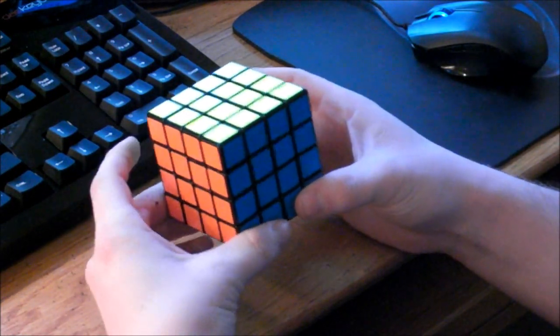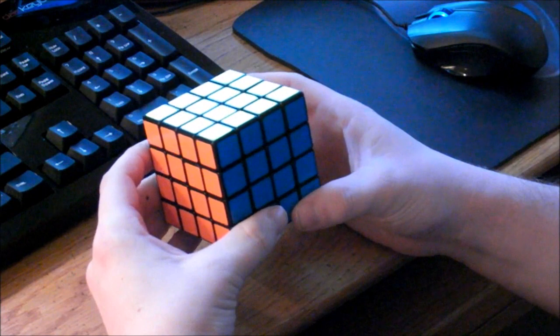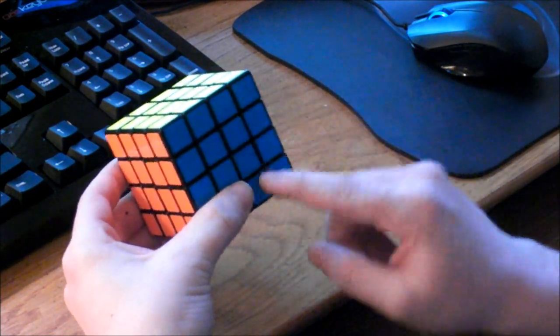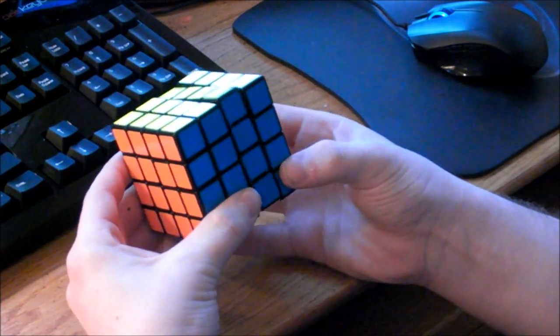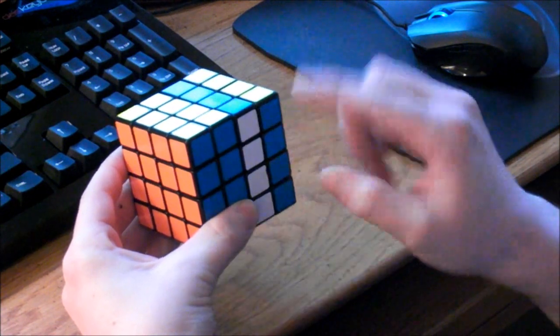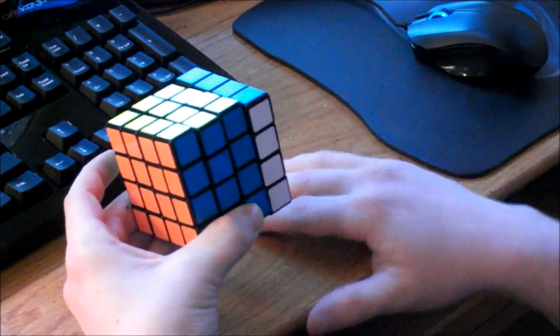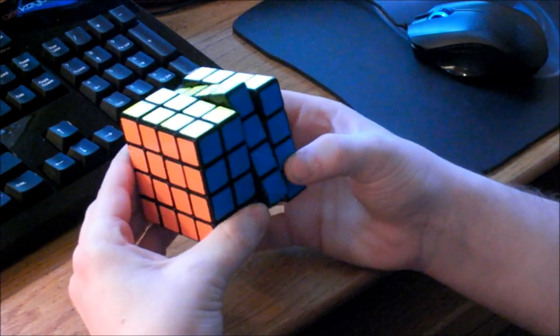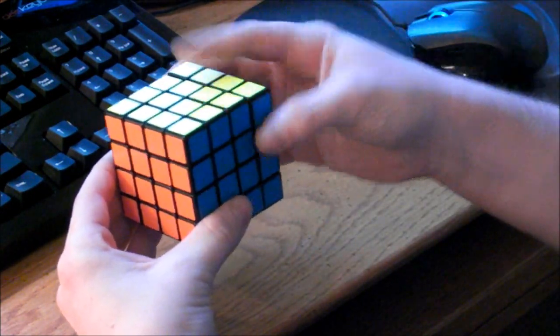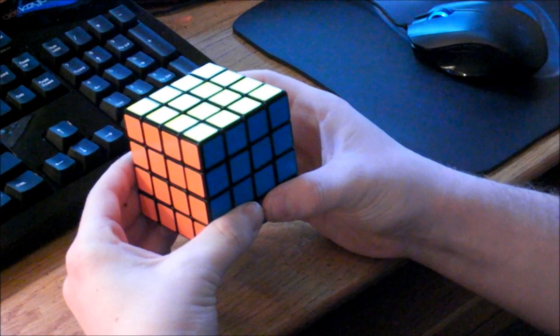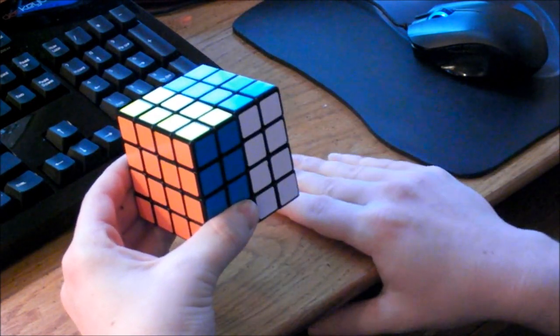Before I start, I would like to say the notation. When there is a lowercase letter, that just means the inner layer. So that is a lowercase r. You all know uppercase r as just the outside, lowercase r is inside, and then rw, which is right wide, is both layers.